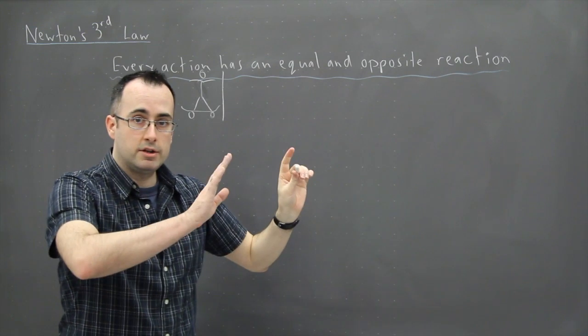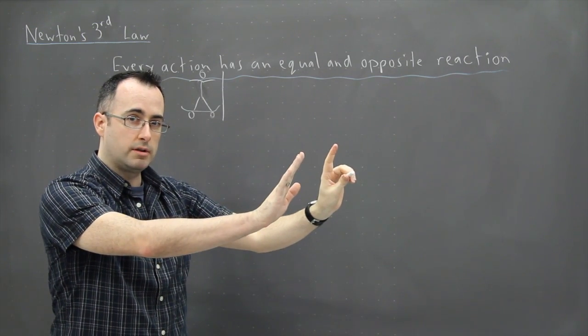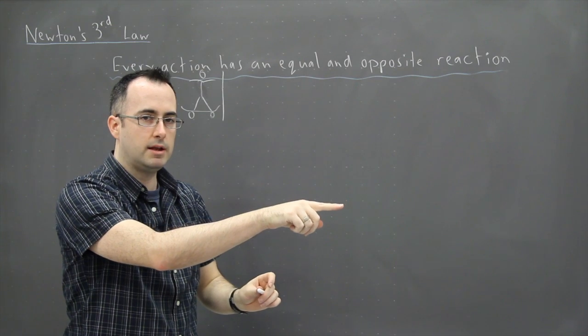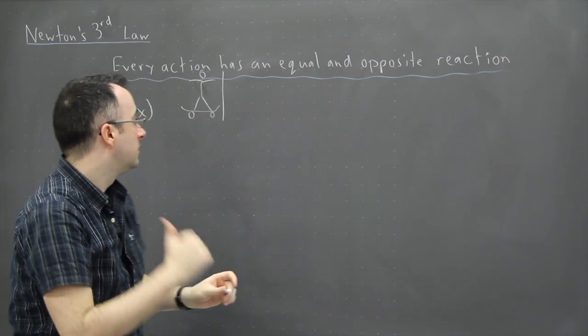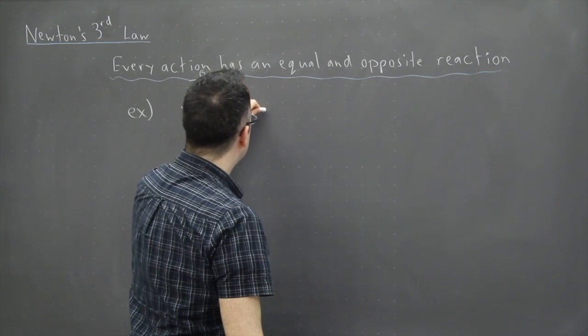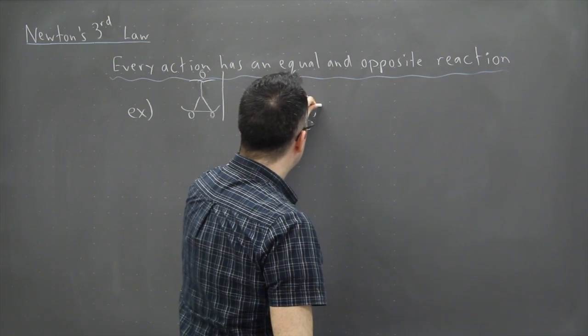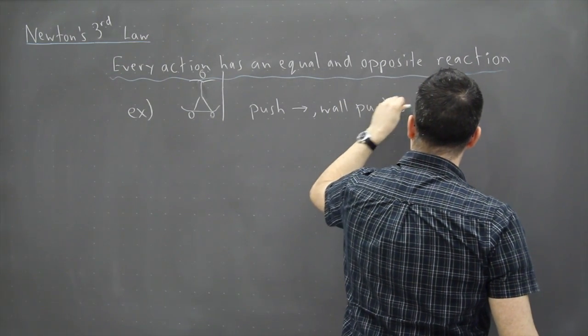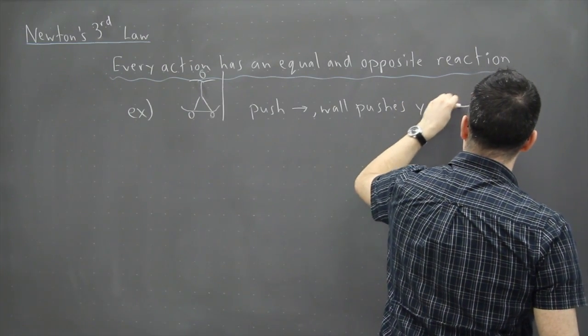Let's say you're on your skateboard and you push against the wall. Think carefully what happens to you. You push one way and yet you go the other way. So in this case we're here, you push to the right, but the wall pushes you to the left.